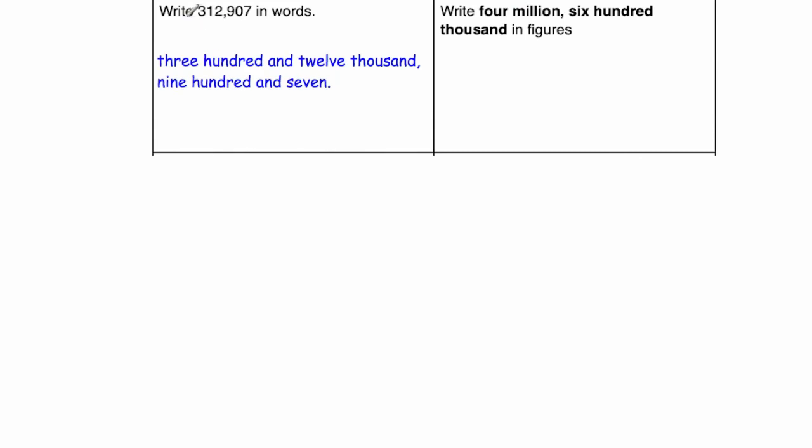OK, our next question. The next question says, to write the number 312907 in words. So it would be 312,000, 907.